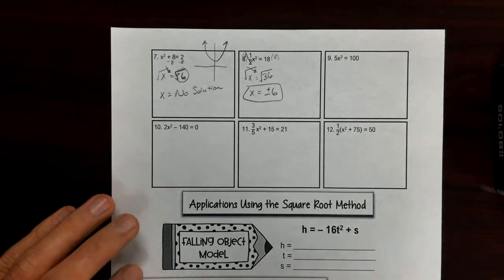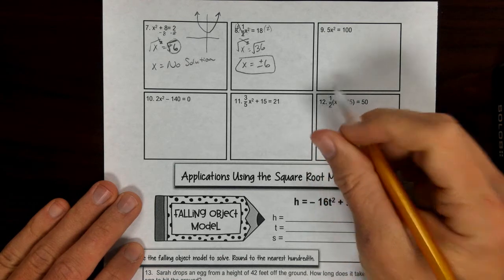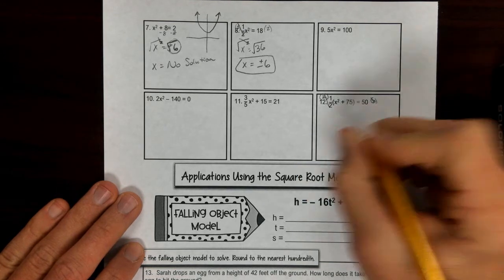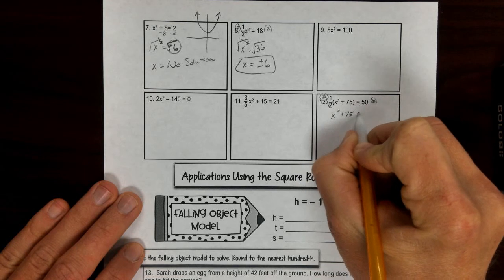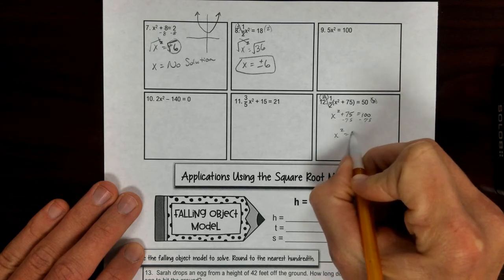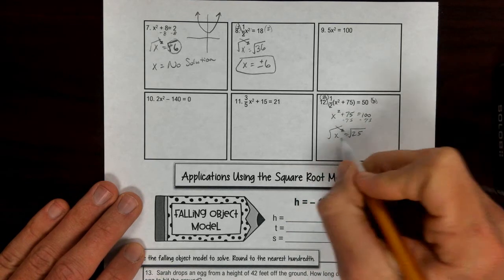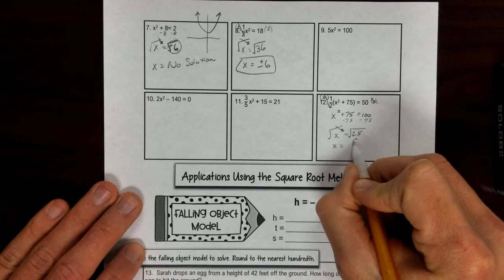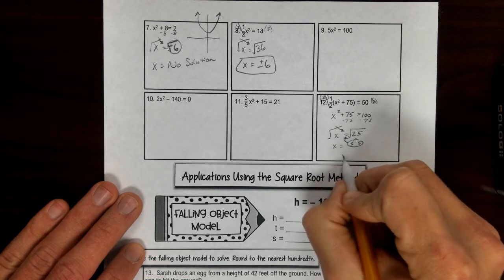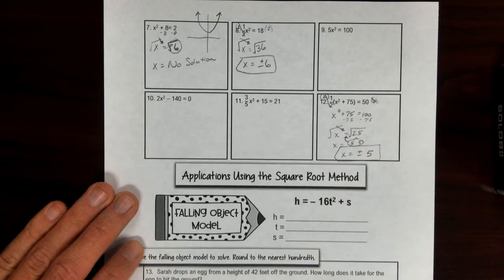Number twelve: get rid of the one-half — the opposite of multiplying by one-half is multiplying by 2. So this becomes x² + 75 = 100. Now subtract 75 on both sides: x² = 25. x² is isolated, so take the square root to get rid of it. x = √25 — factors of 25 are 5 and 5, a pair of 5s comes outside, nothing left — so x = ±5. Two different roots, two different solutions.